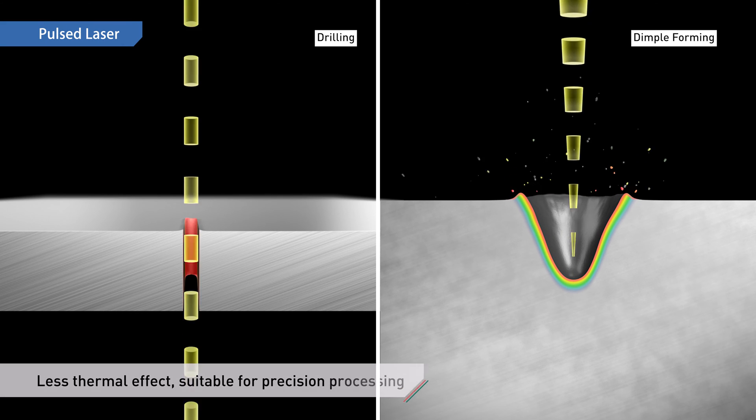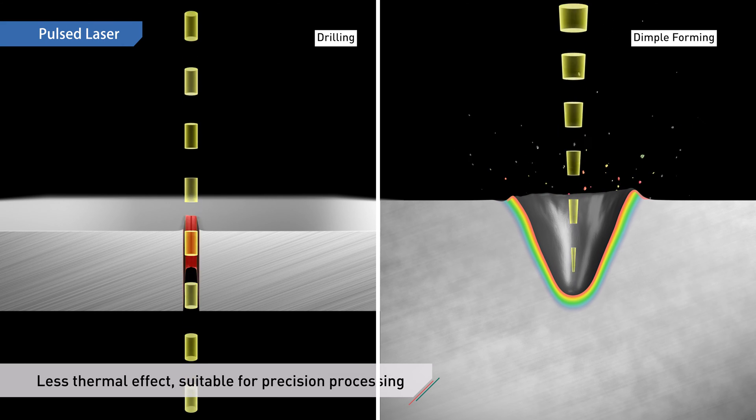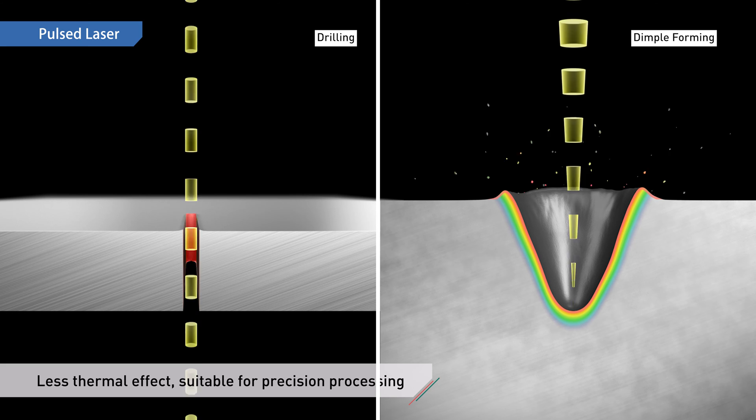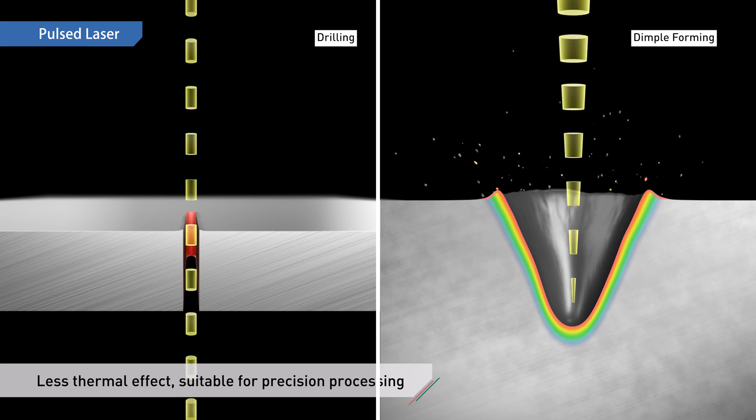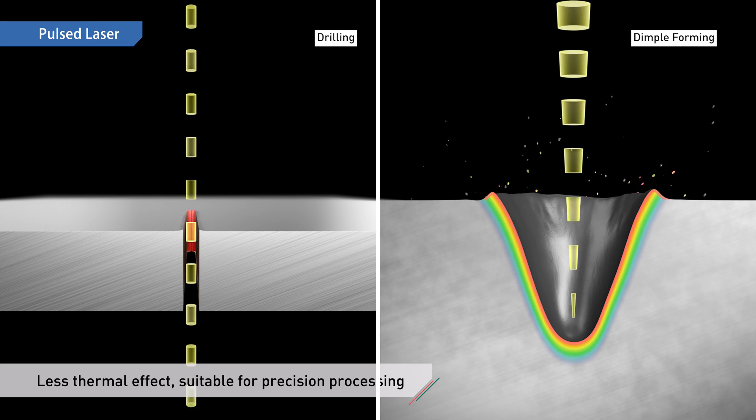A pulsed laser uses short, intermittent irradiation. Unlike a continuous wave laser, the material is instantly ablated without raising its temperature.